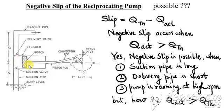And as a consequence, the negative slip occurs. So, the important point is the large inertia of the liquid entering the cylinder leads to the opening of the delivery valve before the commencement of the delivery stroke.